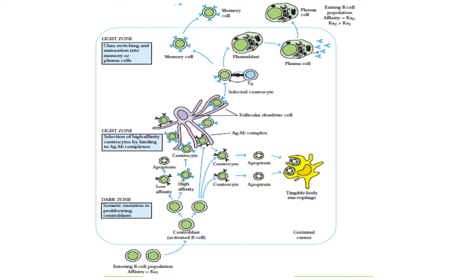Within the spleen, B cells get activated, T cells get activated, and antibodies against the antigen are secreted. In addition to this, in the light zone, the memory cells are also formed. For the formation of plasma cells and memory cells, and for class switching, it is necessary that the environment present in the light zone should be available for the B cell.